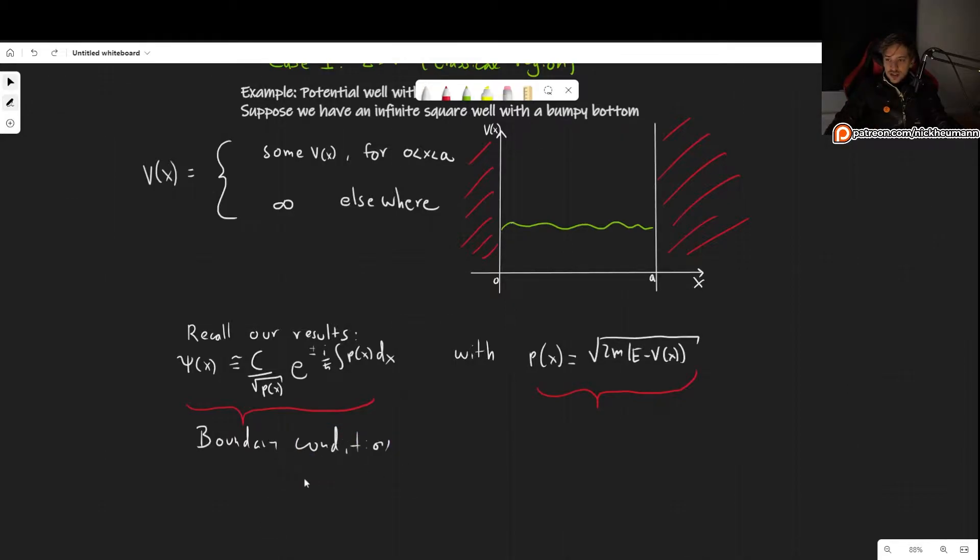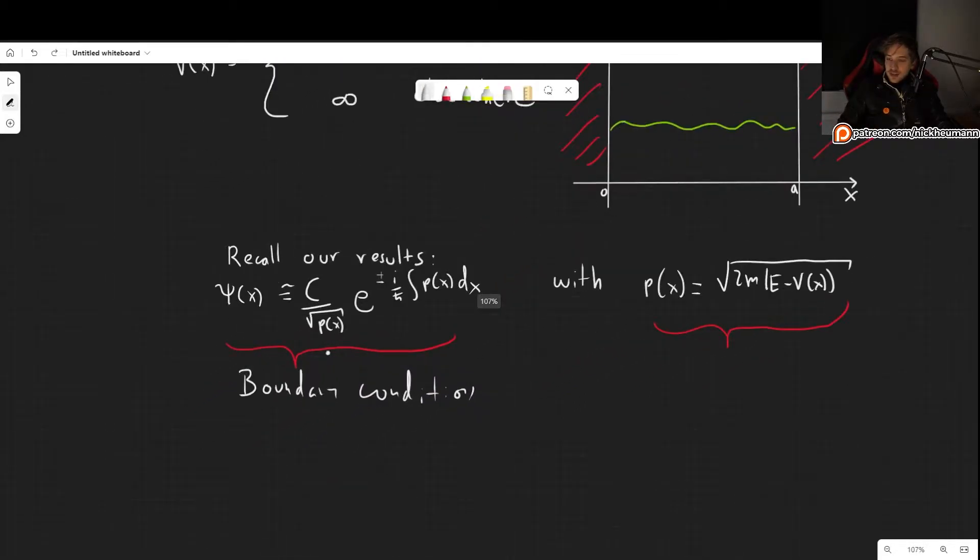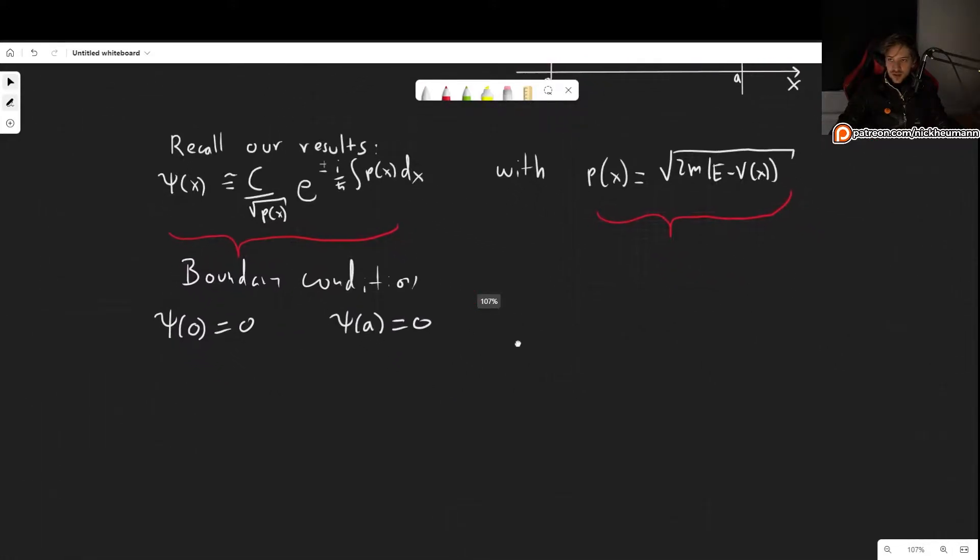So our boundary conditions, since the potential is infinite when x is smaller than 0 and greater than a, psi of 0 has to be 0 and psi of a also has to be 0. Those are our two boundary conditions here.